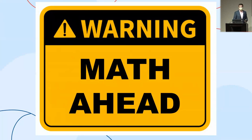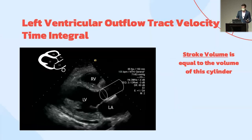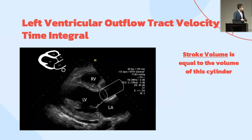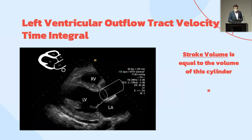Fair warning — there's a lot of math involved, so be prepared. Hopefully you have your coffee this morning. If we think about the heart, every time the left ventricle squeezes, it ejects blood out the left ventricular outflow tract, and this blood takes somewhat the shape of a cylinder. Every time the LV squeezes, that amount of blood going forward is the stroke volume — which is equal to the volume of that cylinder. From geometry, the volume of a cylinder is π r² × length.